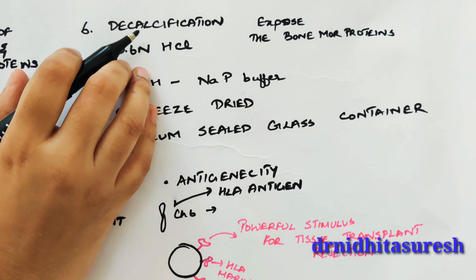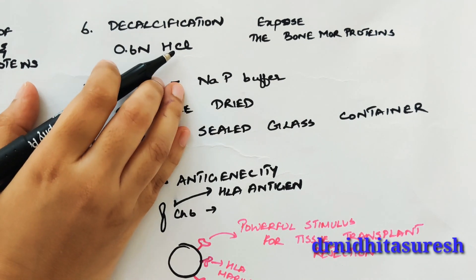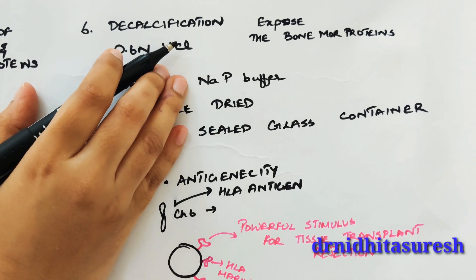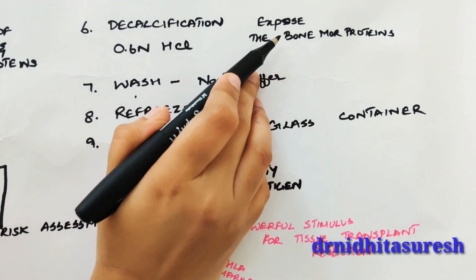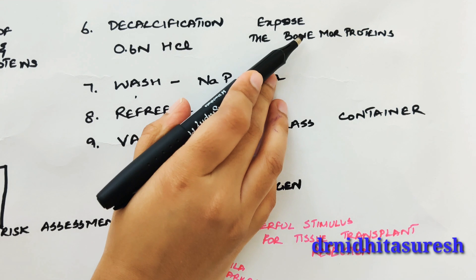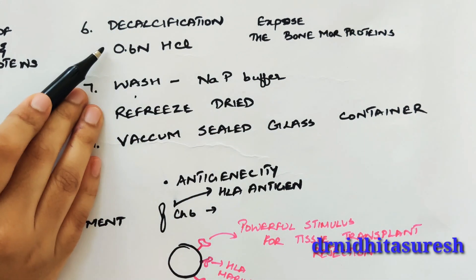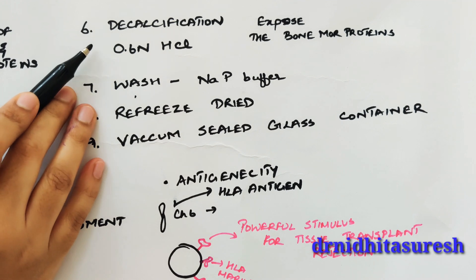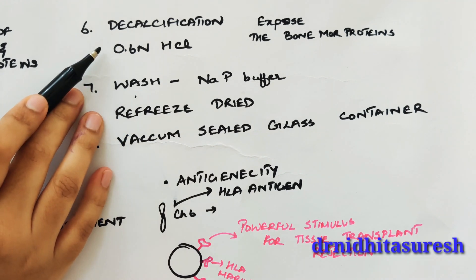The next step is decalcification with 0.6 N hydrochloric acid, done to remove calcium from the matrix and expose the bone inductive proteins — that is, bone morphogenetic proteins or BMPs. This step is required only if you are preparing DFDBA, where demineralization is needed.